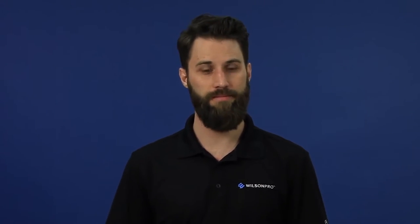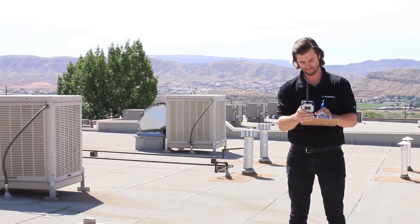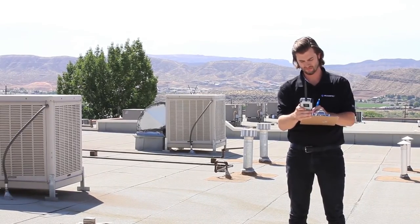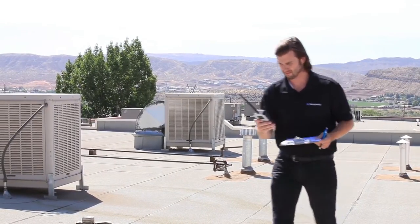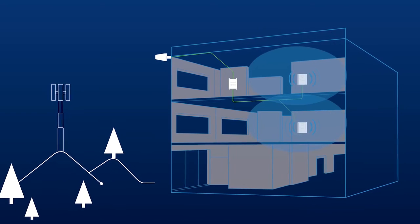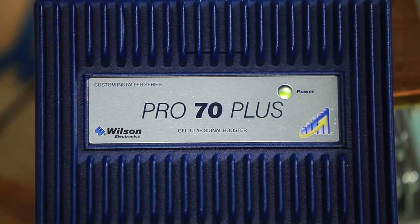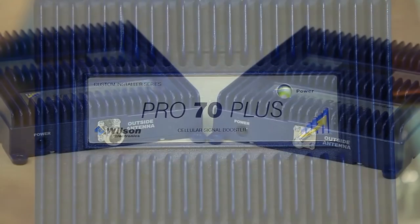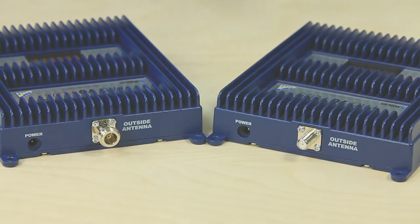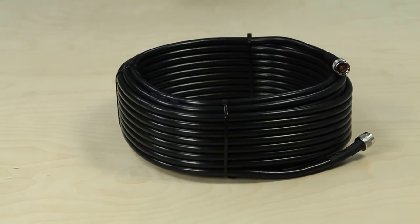It all starts with outside signal. Knowing the outside signal strength will help you determine a number of things: is there enough signal to use a signal amplifier system? How much coverage can be expected from each amplifier? How many inside antennas can the amplifier support? How many total amplifiers will be needed? And what can your max cable lengths be?